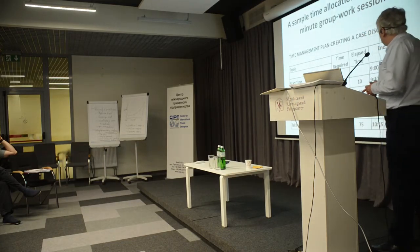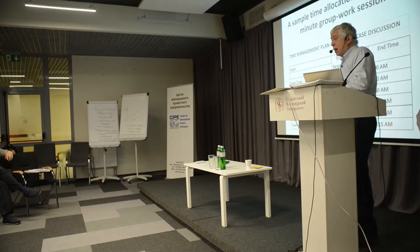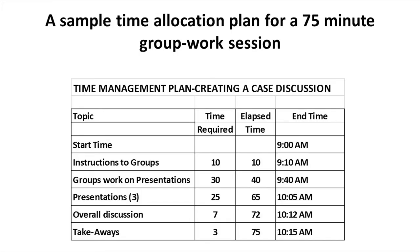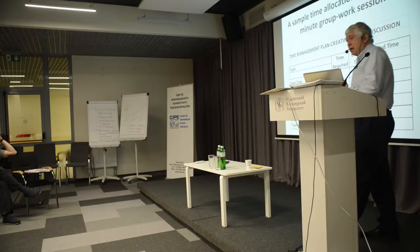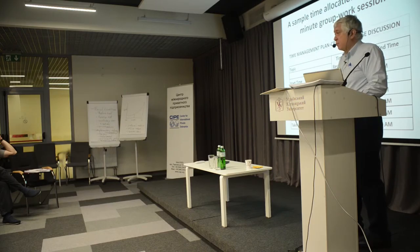Here's another time management plan for a 75-minute work group session — similar to the session we'll be doing when we talk about the Georgia wine case, since we are going to be breaking into groups. The time allocation covers instructions to groups, then groups working on presentations, then time allocated for presentations and overall discussion. Again, it breaks things down so you don't end up running out of time.